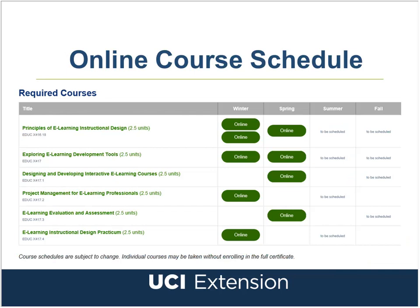On this slide you'll see a screenshot of our online course schedule, which always has the most up-to-date information. You can enroll in any available courses by clicking the green online button. Right now we're taking enrollments for our spring quarter. If you see 'to be scheduled,' that indicates when particular courses are planned to be offered but registration hasn't opened yet. We don't offer every course every quarter, so you want to plan accordingly.